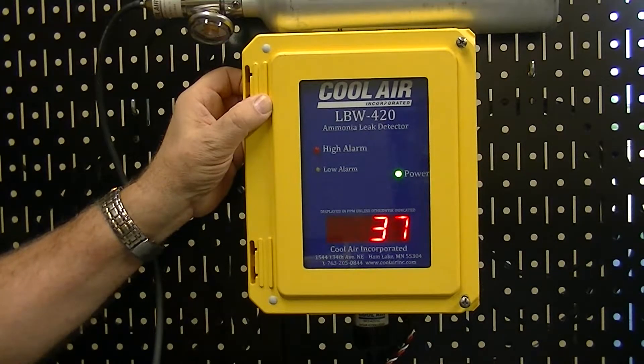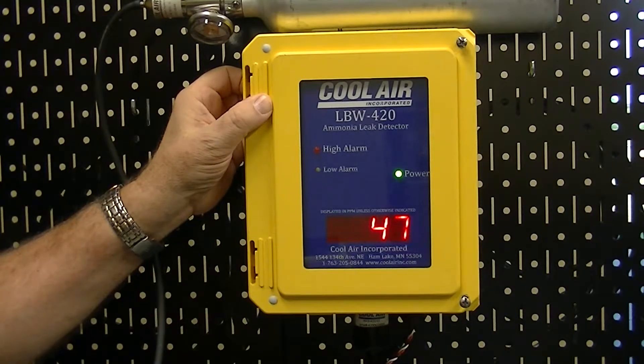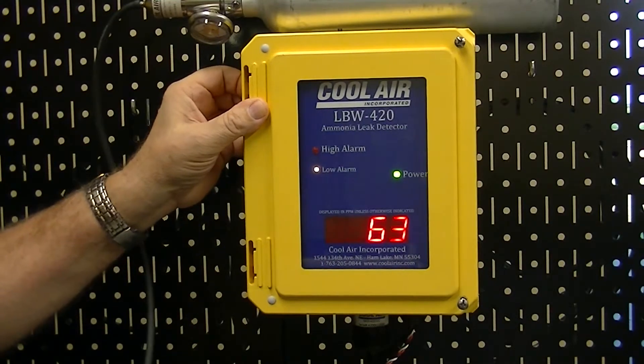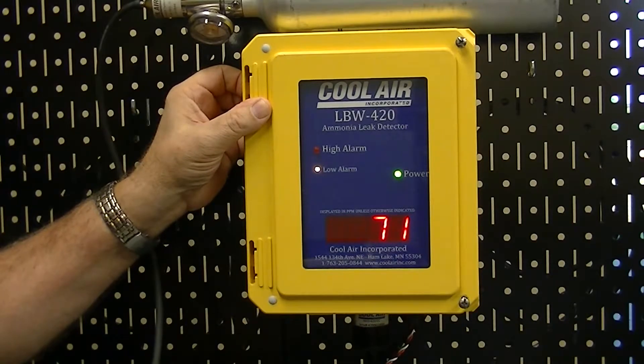You should see the display start to climb indicating the parts per million of ammonia. After two minutes we want to make sure that we're calibrated to the test gas bottle which is 100 parts per million.